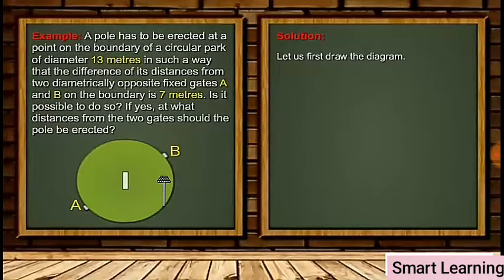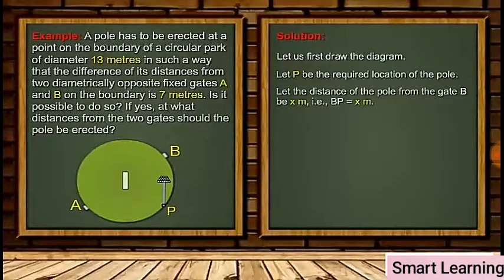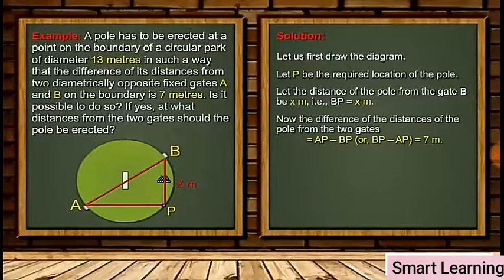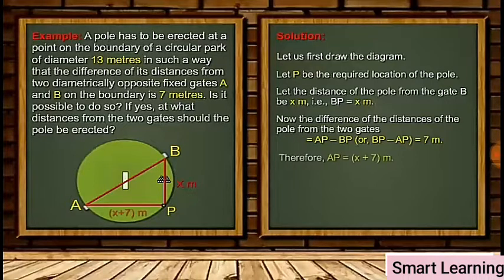Let P be the required location of the pole. Let the distance of the pole from gate B be x meters, i.e. BP = x meters. Now the difference of the distance of the pole from the two gates is AB - BP or BP - AB = 7 meters. Therefore AP = x + 7 meters.